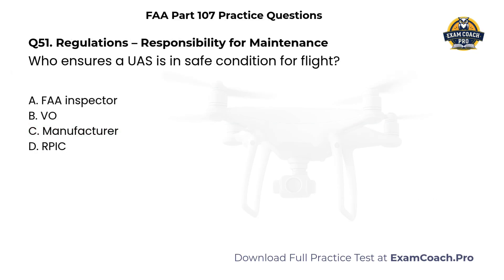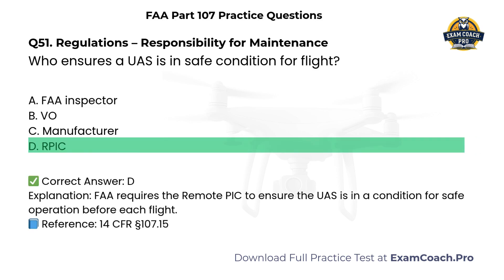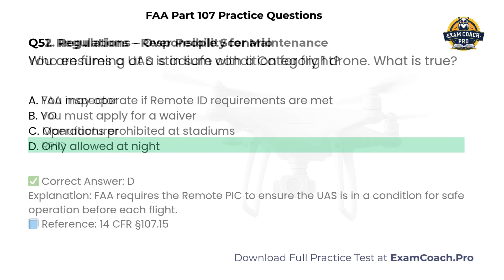Regulations — Responsibility for Maintenance. Who ensures a UAS is in safe condition for flight? A. FAA inspector. B. Visual observer. C. Manufacturer. D. Remote PIC. Correct answer: D. Remote PIC. The FAA requires the remote PIC to ensure the UAS is in a condition for safe operation before each flight.